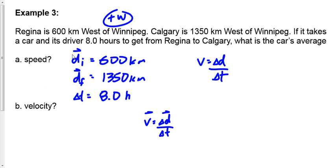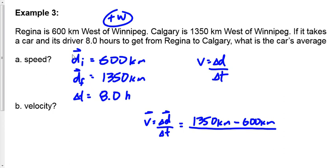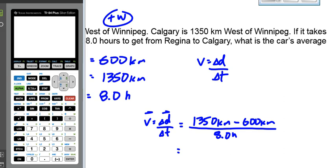Let's do displacement first. Displacement is final minus initial position: 1350 km minus 600 km equals 750 km. Dividing by 8 hours gives us 94 kilometers per hour. That's positive 94 km/h for velocity.